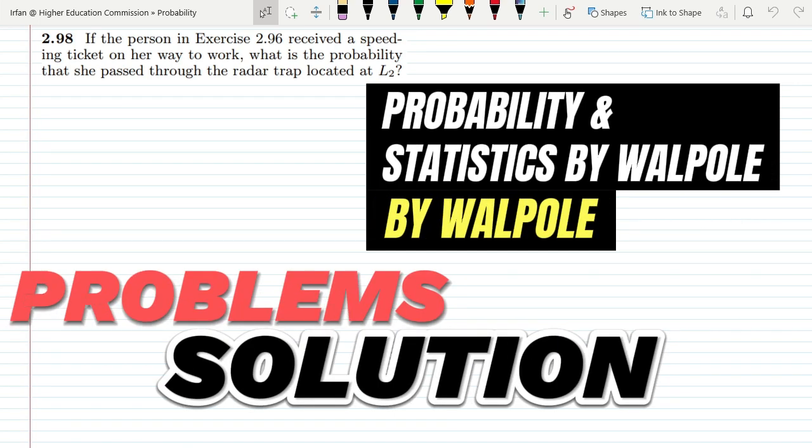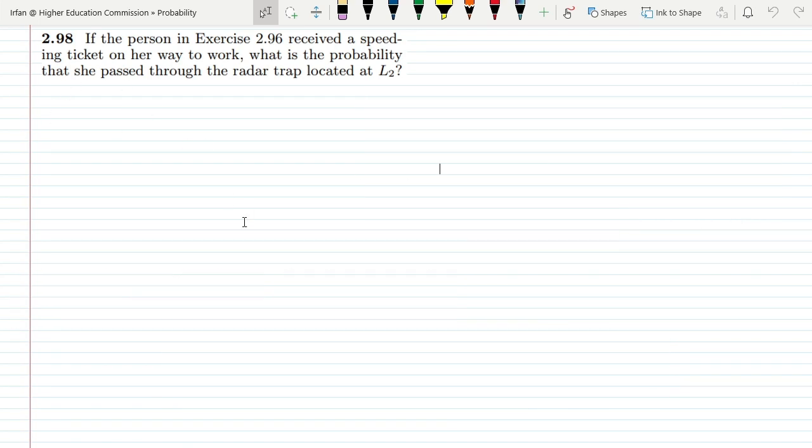Welcome guys, I hope all of you will be fine. This is question 2.98 and the statement is: if the person in exercise 2.96 received a speeding ticket on her way to work, what is the probability that she passed through the radar trap located at L2?